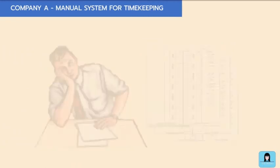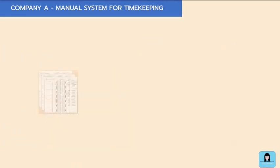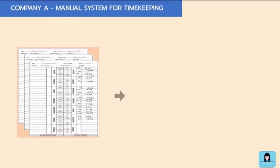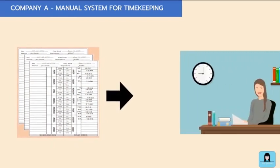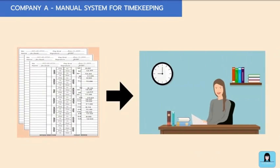Then, the time cards are forwarded to the timekeeping personnel to manually calculate the hours worked for payroll. Just imagine the time spent reviewing and calculating the hours worked for employees.